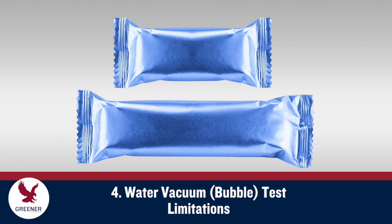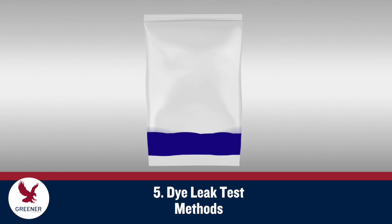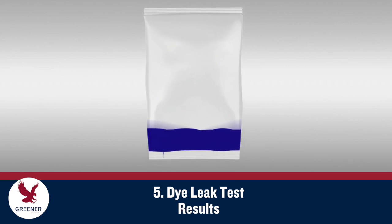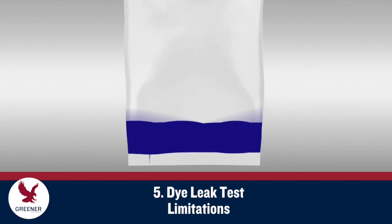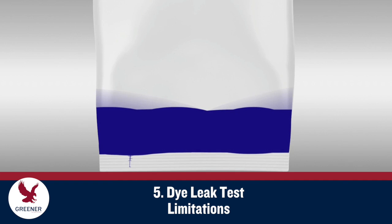Water vacuum tests don't accurately measure leak size, since results are influenced by the initial air fill, size, and geometry of the package. Initial air fill must also be considered when assessing the impact of pressure changes during shipment. Since the manual squeeze test is not accurately repeatable, results can be inconsistent. Dye leak tests can also indicate the presence and location of leaks. Colored dye is injected into the package, held for a set time with the seal oriented horizontally at the bottom, and then inspected. Leaks are indicated by places where the dye has migrated through the seal. The dye leak test tends to be less sensitive for smaller leaks and doesn't quantify the magnitude of leaks.